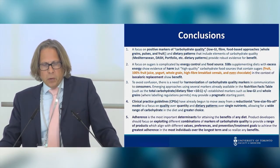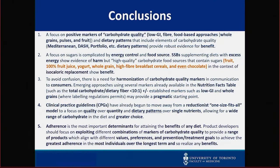In conclusion: a focus on positive markers of carbohydrate quality — low GI, low GL, fiber, food-based approaches like whole grains, pulses, and fruit — and dietary patterns including these elements provides robust evidence for benefit. A focus on sugars is complicated by energy and food source; the matrix and energy dose both matter. As my mentor David Jenkins would say: 'A little sugar helps the fiber go down, or a little salt helps the vegetables go down.' It's not about zero — it's about how we get consumers to actually consume these foods.